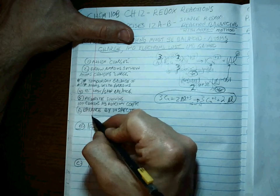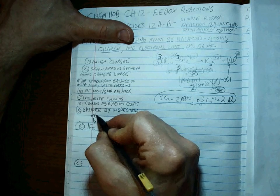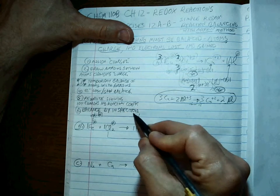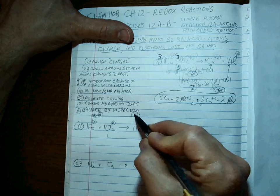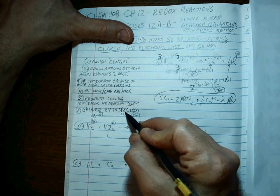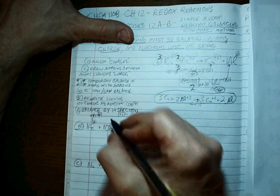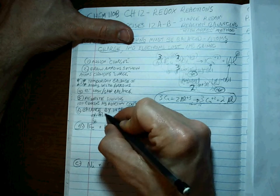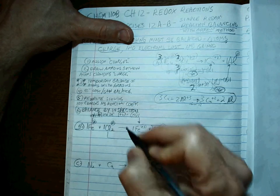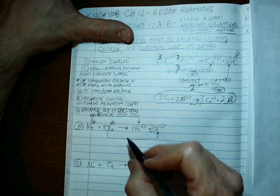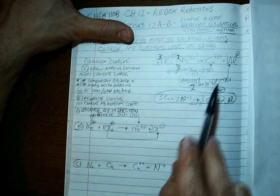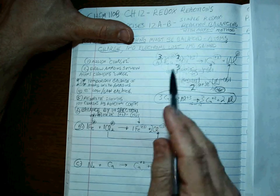One times zero is zero; one times plus two is plus two. To get from zero to plus two, we're losing two electrons — getting more positive, losing the negatives. That's the same one-to-one ratio as before.